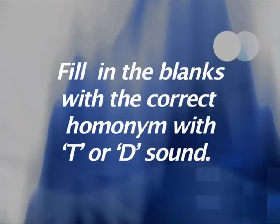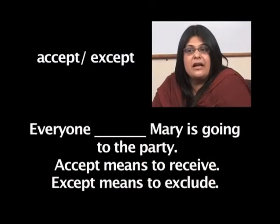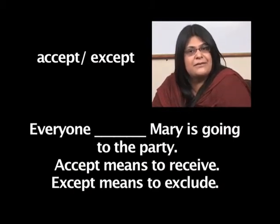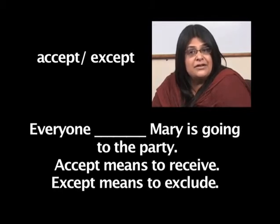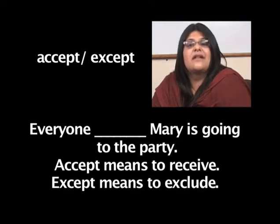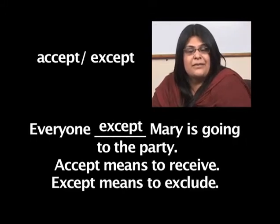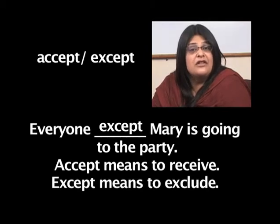In this exercise, we have to fill in the blanks with the correct homonym with T or D sound. The exercise is given in your workbooks. The first sentence: 'Everyone dash Mary is going to the party.' The options are accept or except. The correct answer would be except. Accept means to receive; except means to exclude. Therefore, everyone except Mary is going to the party.